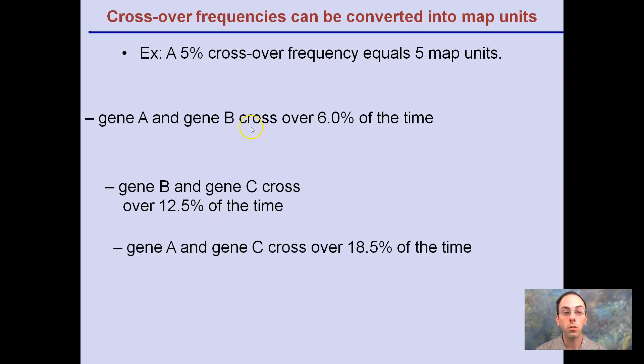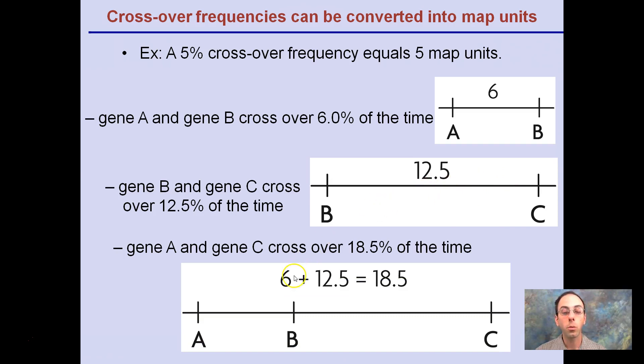Gene A and Gene C, taking information from here and here, cross over 18.5% of the time. So this being 6 map units away, this being 12.5 map units away, 6 plus 12.5 would give us the 18.5, indicating A to B, and then C is located over here. You can see this follows everything here. A and B, 6 units away, yep. B and C are 12 units away, indicating that A to C is 18.5. That makes it simply go A, B, C.